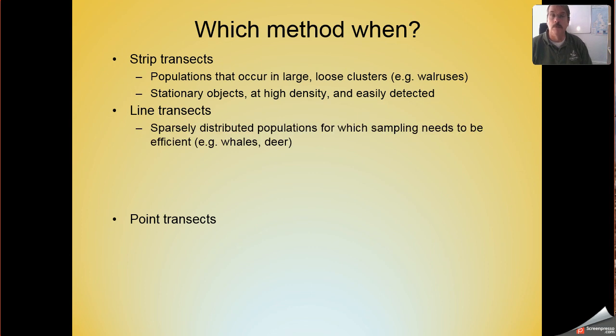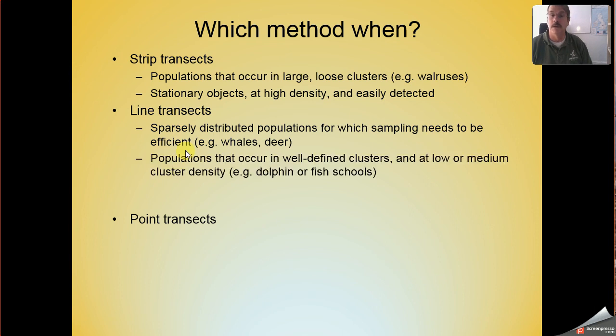Line transects come into their own when we work with animals that are sparsely distributed. They don't occur at high densities. They're spread out across large regions, and we need to be efficient in our data collection. Line transects are also useful when we have animals that occur in clusters, but when those clusters are easy to define. Schools of dolphins, schools of fish.